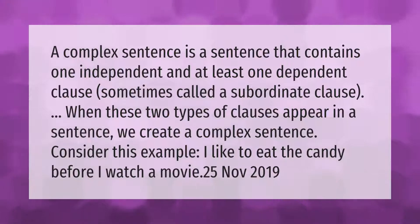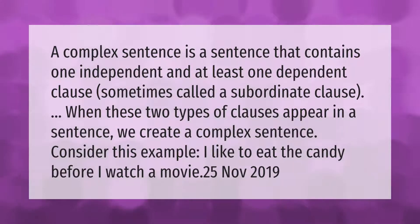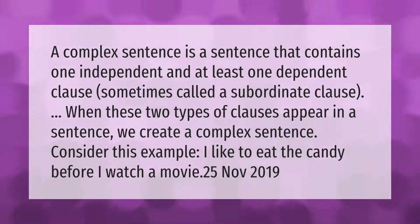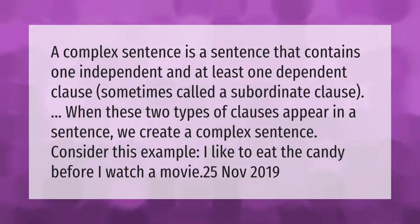A complex sentence is a sentence that contains one independent and at least one dependent clause, sometimes called a subordinate clause. When these two types of clauses appear in a sentence, we create a complex sentence. Consider this example: I like to eat the candy before I watch a movie.